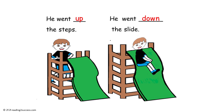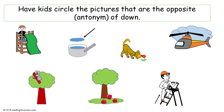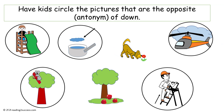Now have kids read the sentences for the antonyms up and down. He went up the steps; he went down the slide. Now have kids circle the pictures that are the opposite, the antonym of down — so they are going to circle the pictures that show something up. The pictures that show something up are the boy climbing the steps, the steam rising above the pot, the helicopter up in the sky, the koala bear up on the branch, and the painter climbing up the steps.